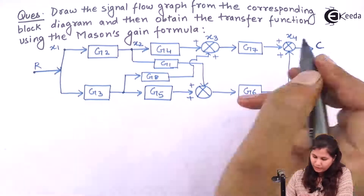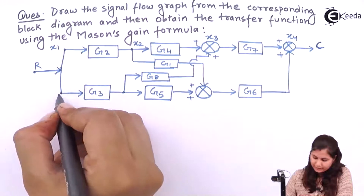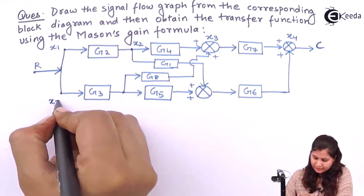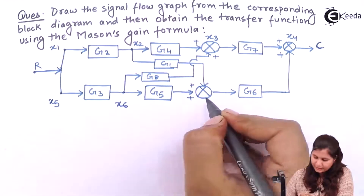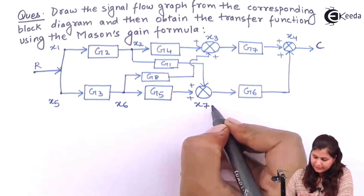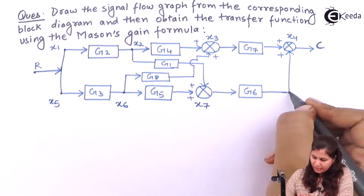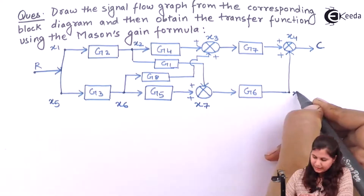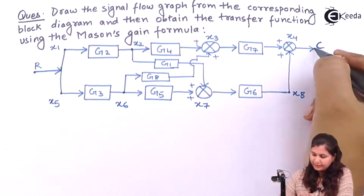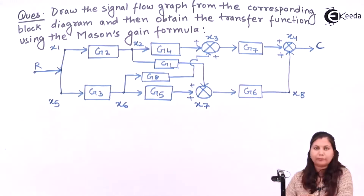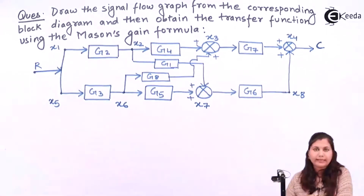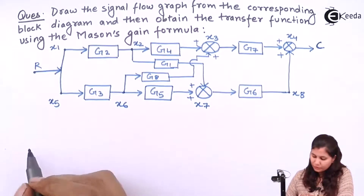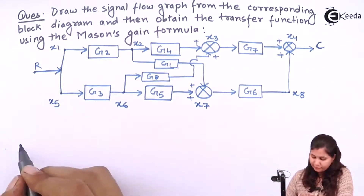Now coming to this side: this is x5, then we have x6, this summing point is x7, and this is x8. And this is our output node. So we have a total of 10 nodes in this system. Now let's draw the signal flow graph.